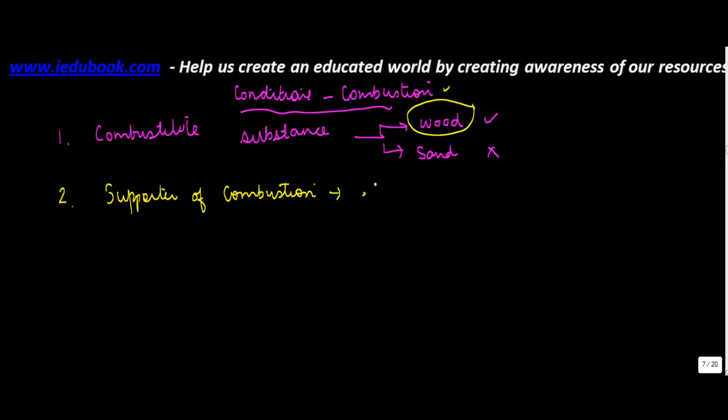Air or oxygen are necessary for combustion to take place and these are known as supporter of combustion. So, if there is no air or oxygen, then combustion cannot take place. It has to be there without which combustion cannot take place.